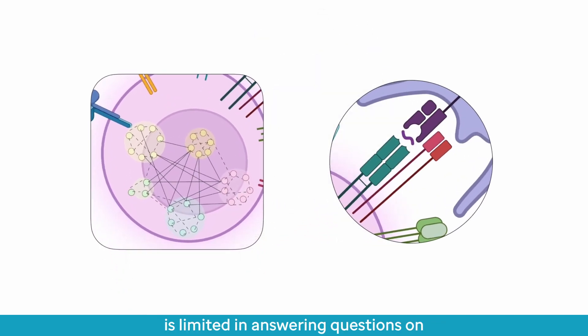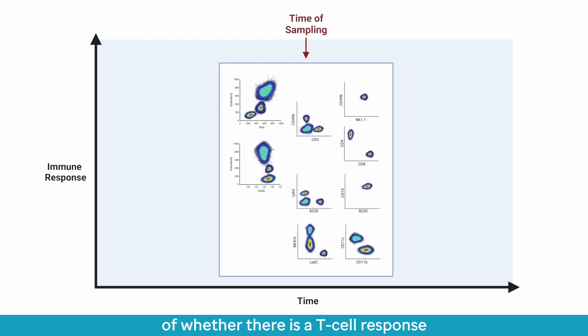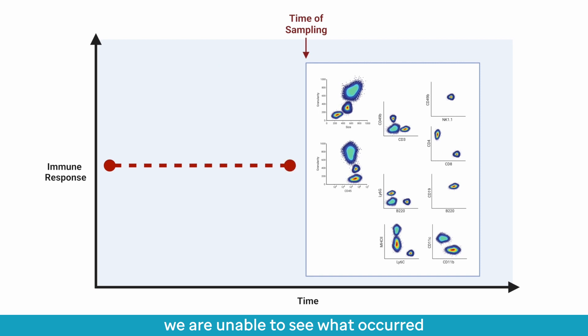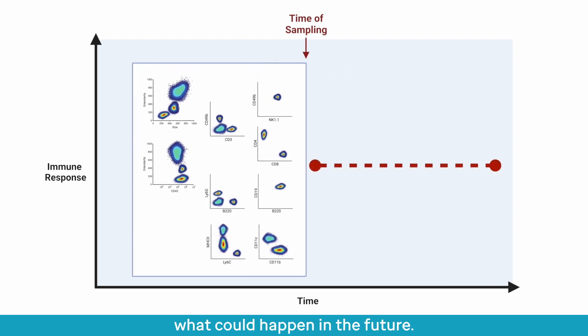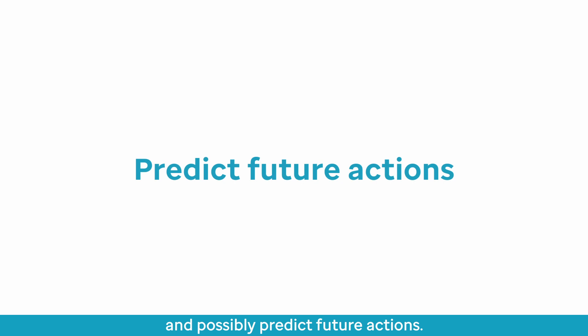Flow cytometry is limited in answering questions on both fronts. Although flow cytometry can give us a rough snapshot of whether there is a T cell response at a given point in time, we are unable to see what occurred before this time or to predict what could happen in the future. To work around these hurdles, find a way to trace the history of T cell response, and possibly predict future actions.